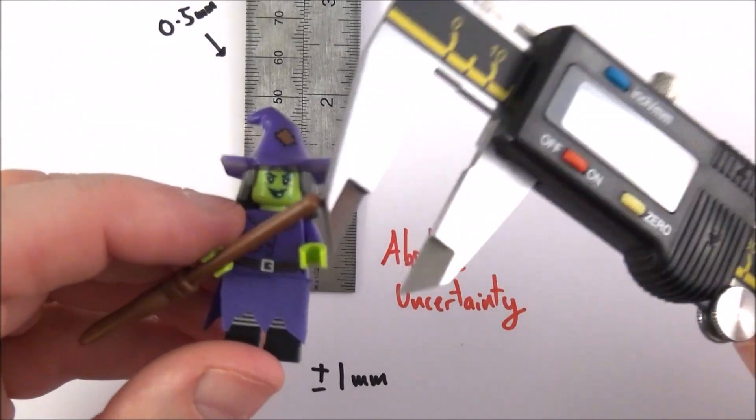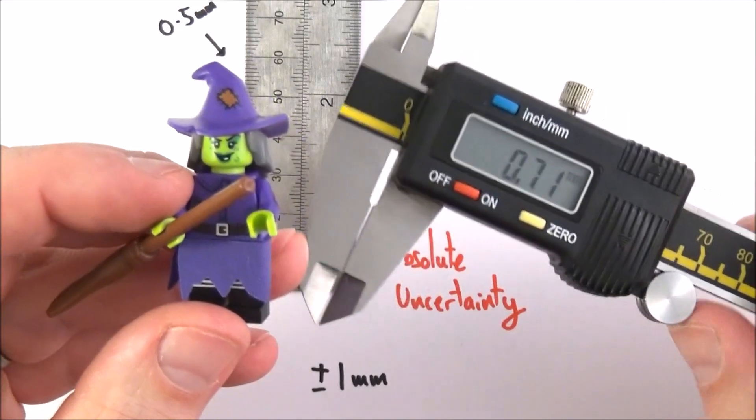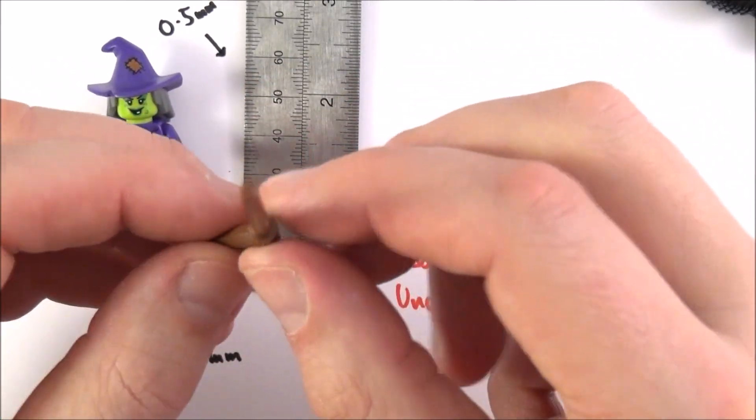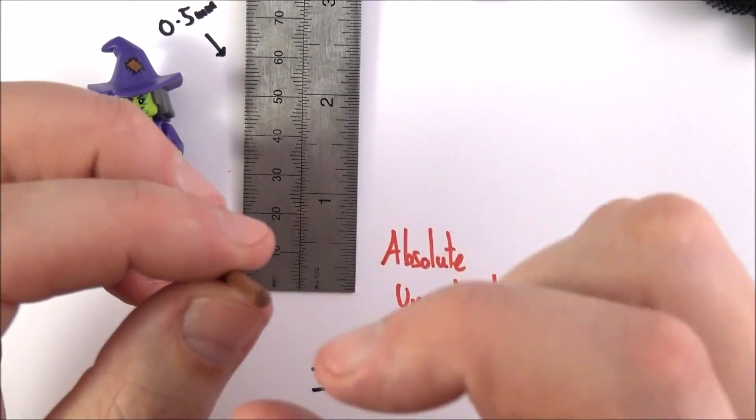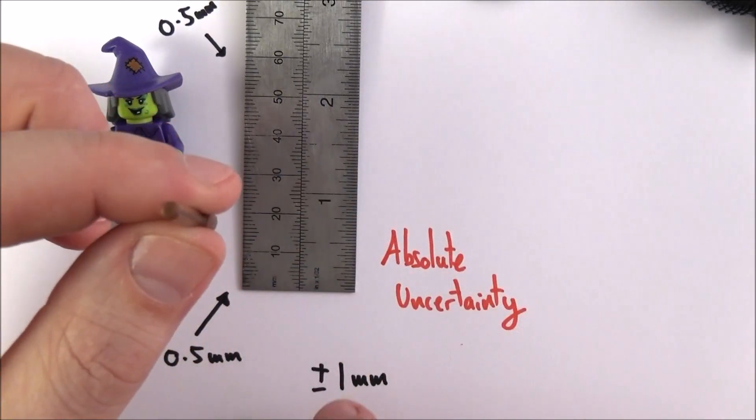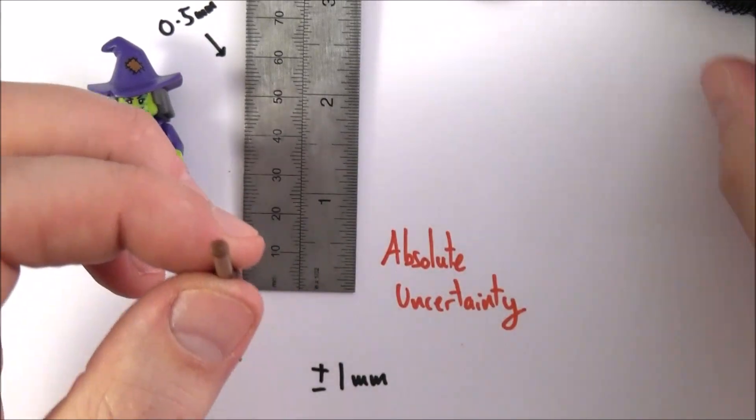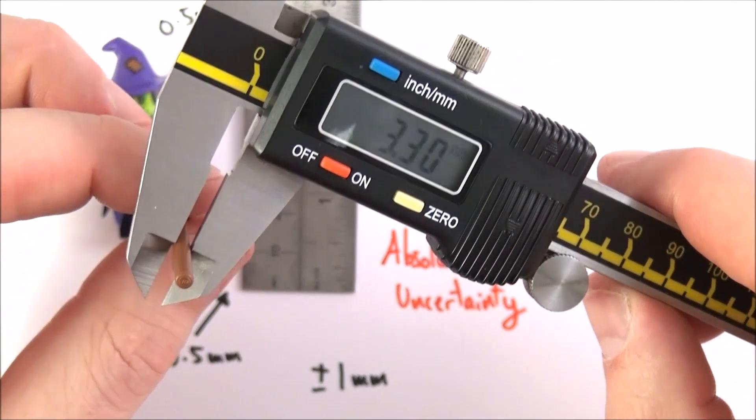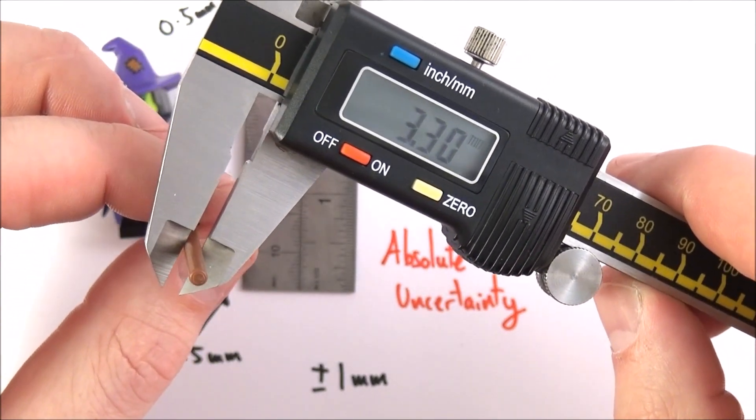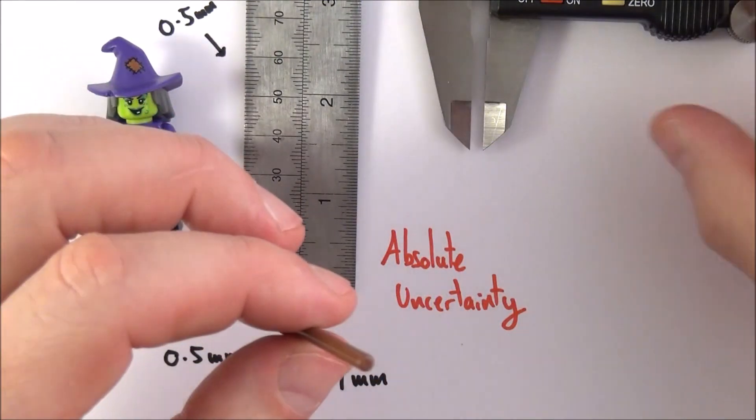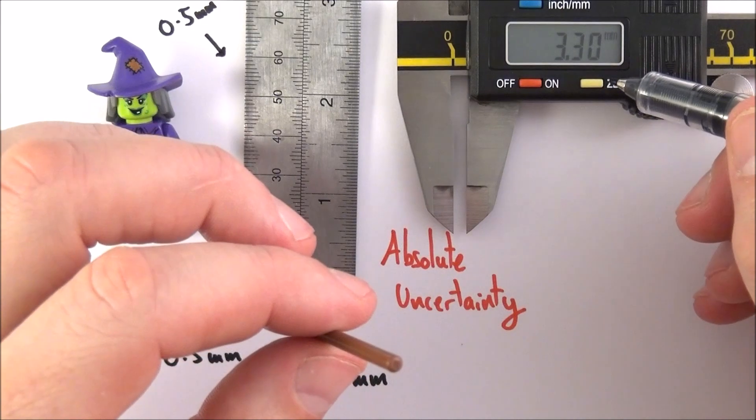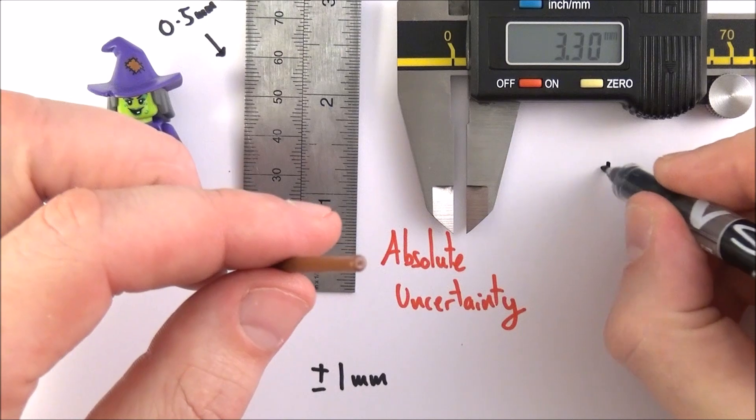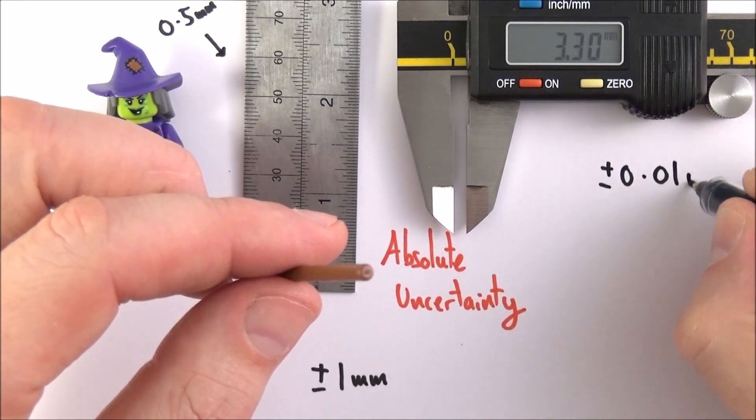Perhaps we can use a different measuring device. Here I have a digital caliper and what we can do is use this to measure perhaps the diameter of the broomstick. If you use a 30 centimeter ruler which measures to the nearest one millimeter, we're going to have a fairly large absolute uncertainty for quite a small distance. If I use this caliper, I can close that very gently and this gives us a value of 3.30 millimeters. Because we have a digital scale, the actual uncertainty is going to be a lot less and the absolute uncertainty with this instrument is going to be plus or minus 0.01 of a millimeter.